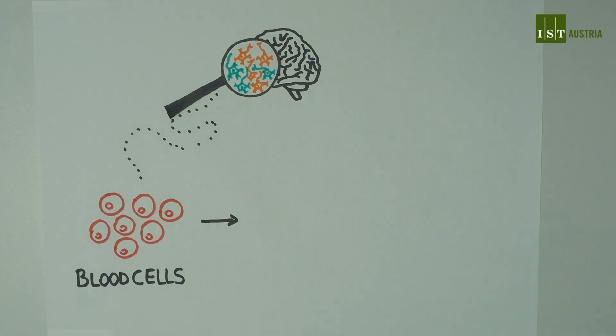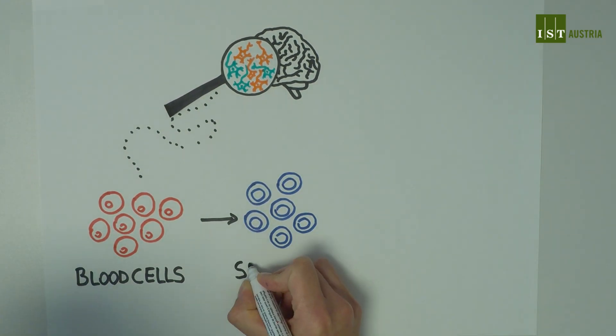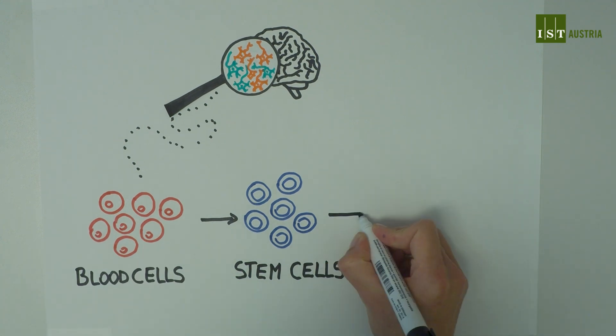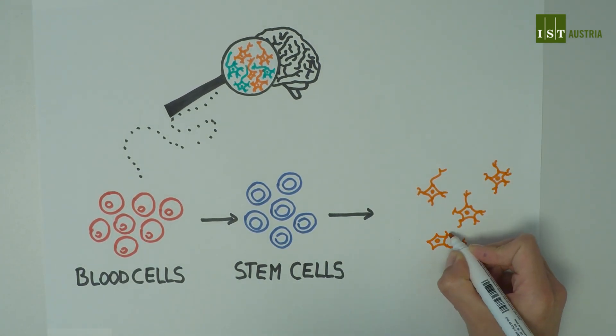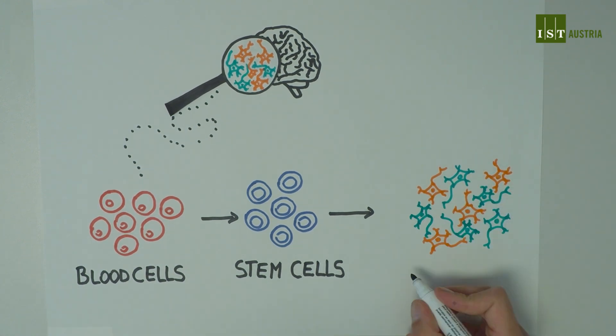We utilize recently developed methods to reprogram patient-specific blood cells into pluripotent stem cells. These stem cells regain the ability to develop into any cell type of the human body, including brain cells.